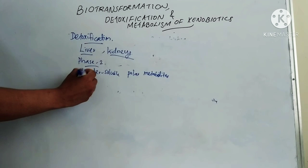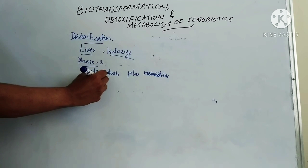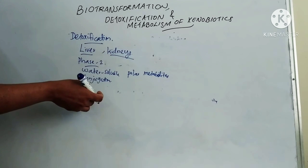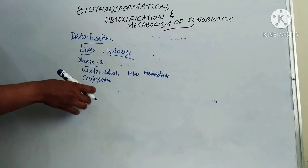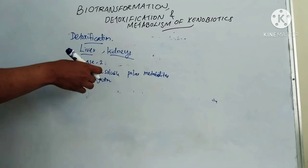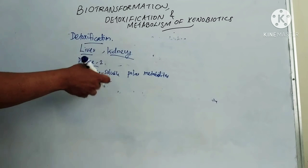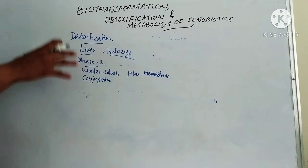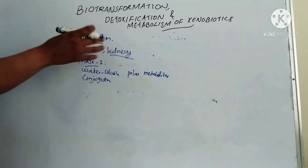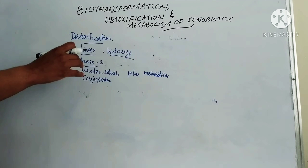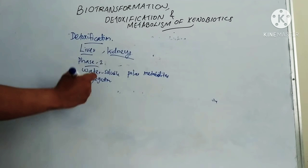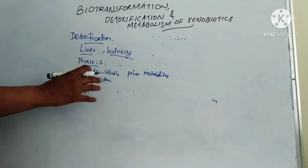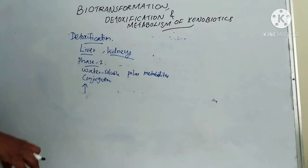Phase 2 conversion is accomplished by conjugation with various conjugating agents such as glucuronic acid, active sulphate, then by methylation and acetylation, etc. The overall purpose of Phase 1 and Phase 2 is to increase water solubility and thus facilitate excretion from the body.